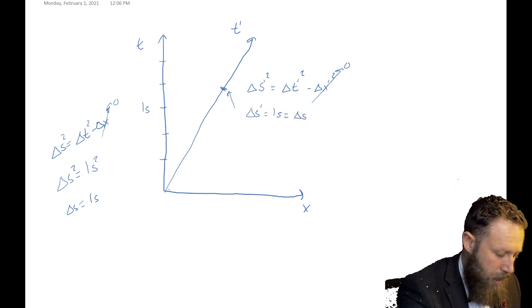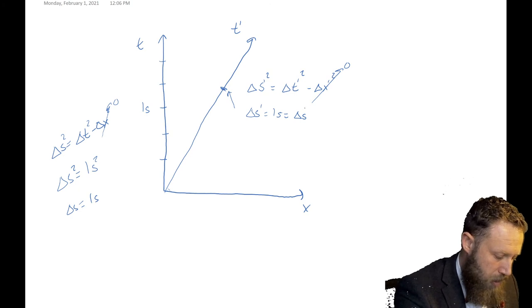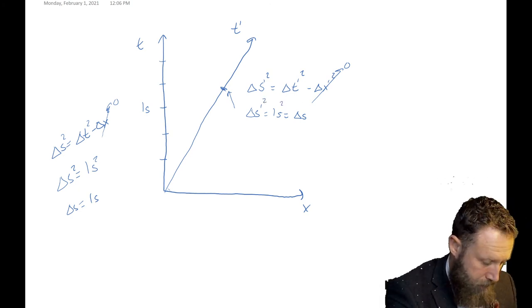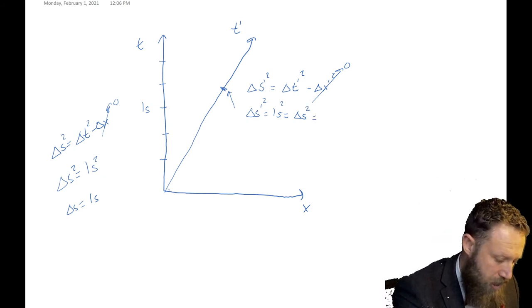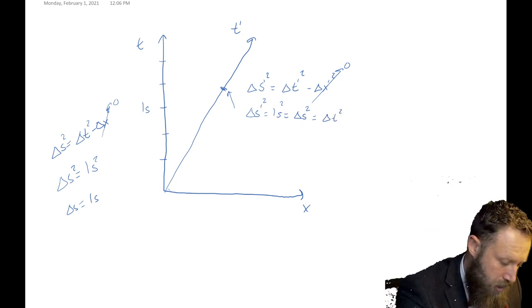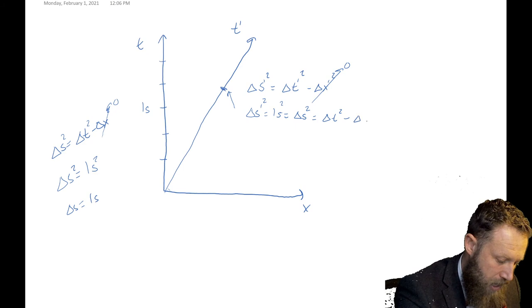And so we also know that if we do this, let's look at the squared value. We also know that delta s prime squared is equal to delta s squared. And we already know what delta s squared is in terms of our coordinates. It's delta t squared minus delta x squared.